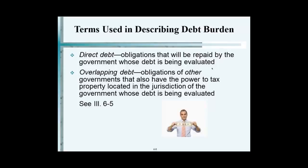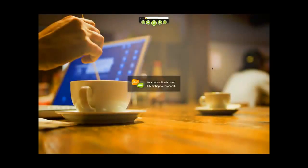Overlapping debt is obligations of other governments that also have the power to tax property located in the jurisdiction. You might say, wait a minute, the county doesn't tax my property — it's the town. No. If you look at your property tax bill, it's like three pieces of a pie. One piece of the pie is for the town, the other piece is for the schools, and the third piece is for the county. And you'll be surprised — the amount for the town is very small. Most of it is taken up by county and schools. Some counties have very high tax rates. That's what this concept of overlapping debt is.